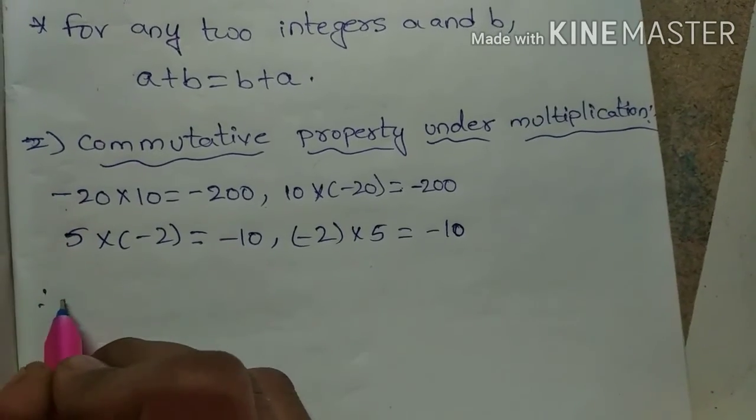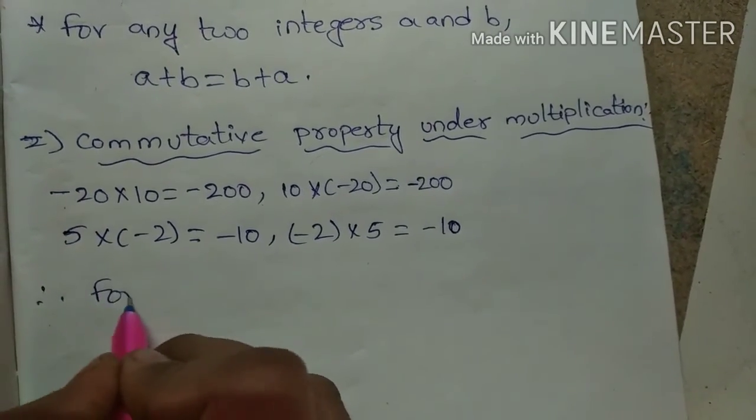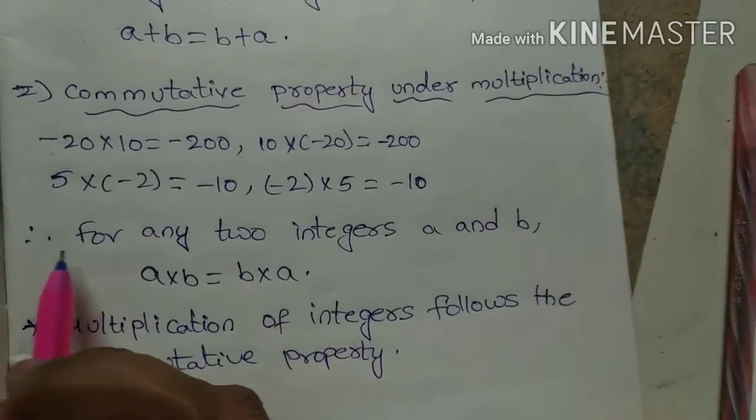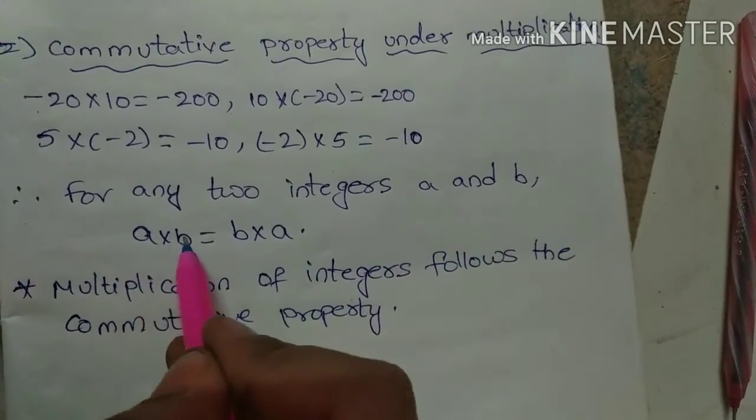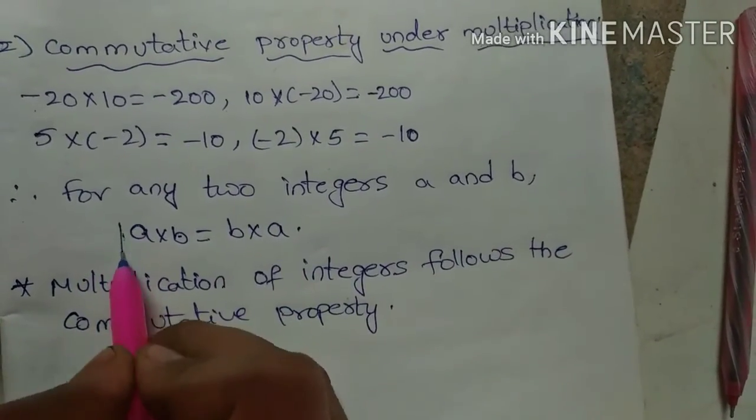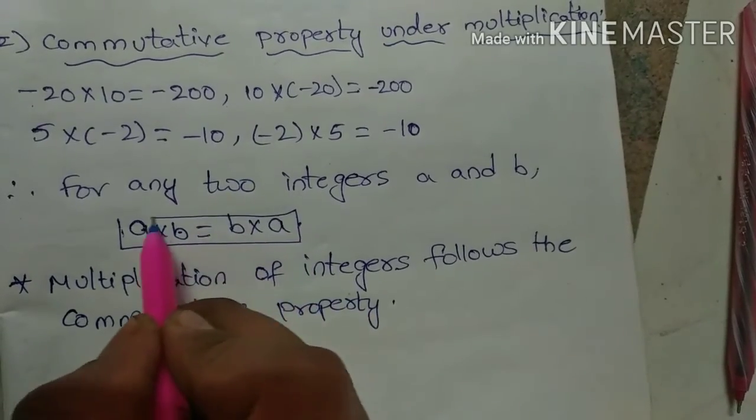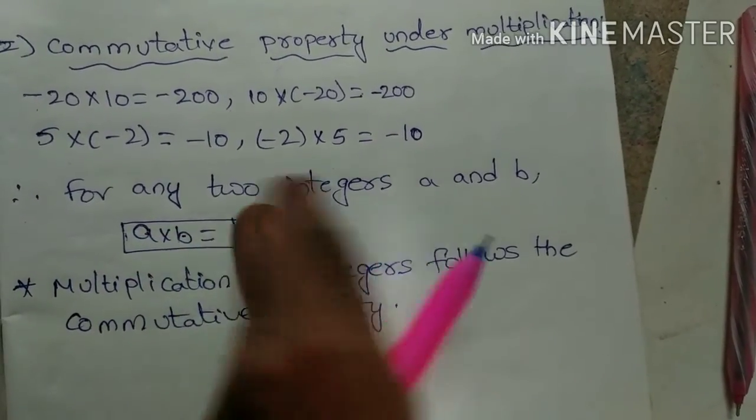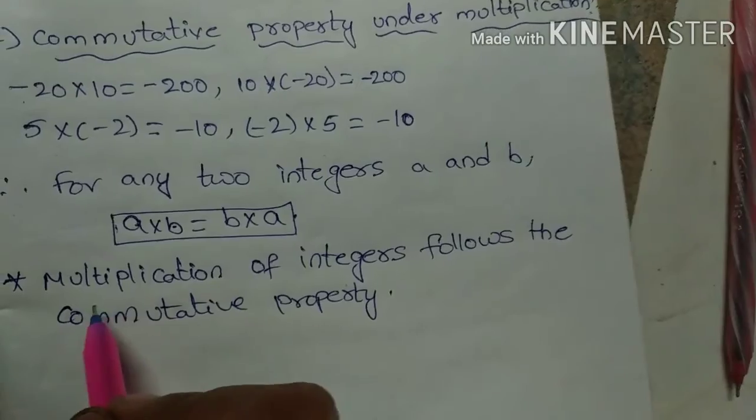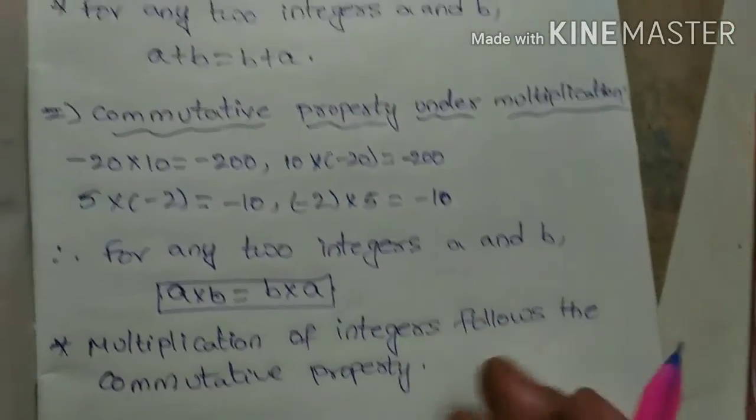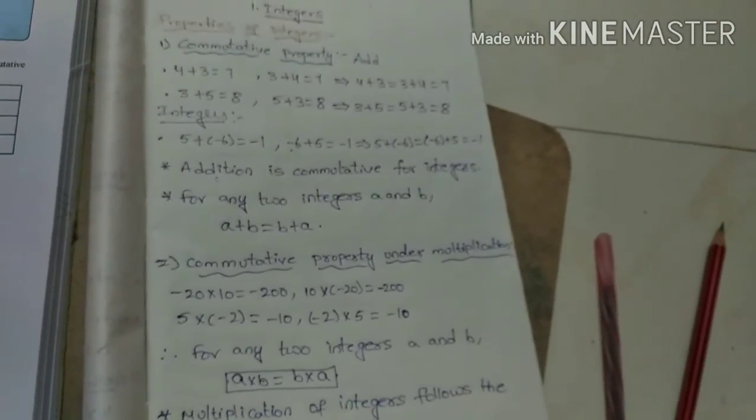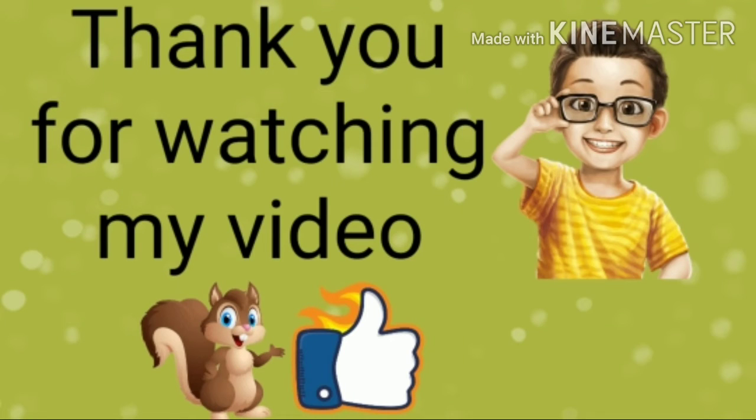So how to write this? For any two integers a and b, a × b equals b × a. Remember, commutative property means order change. Multiplication of integers follows the commutative property.